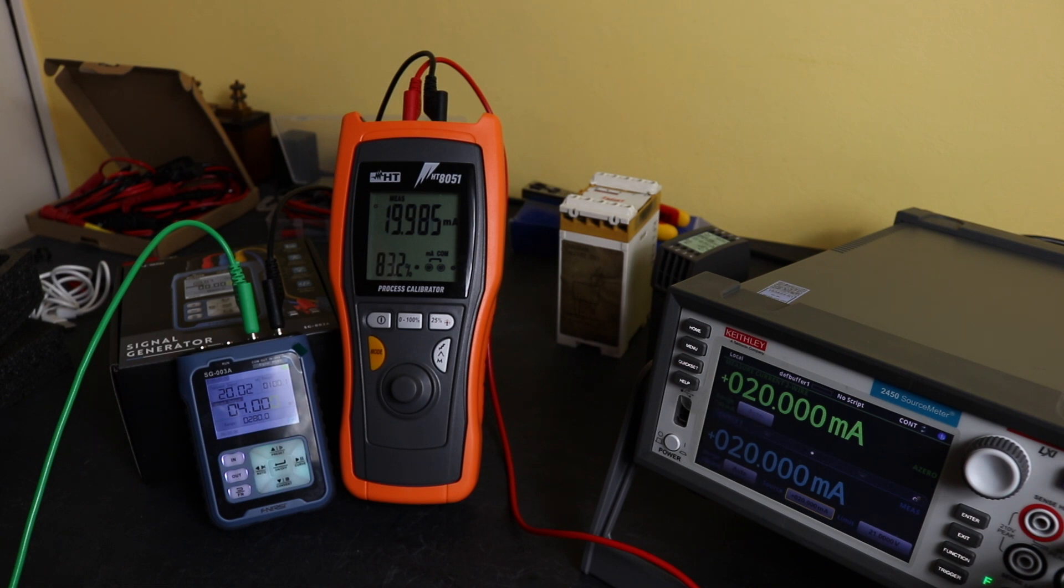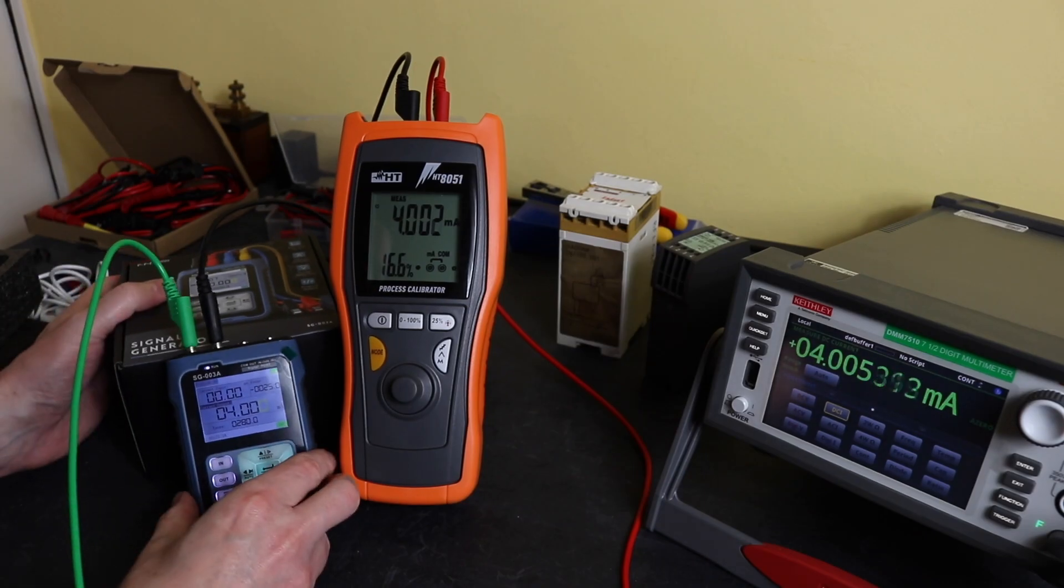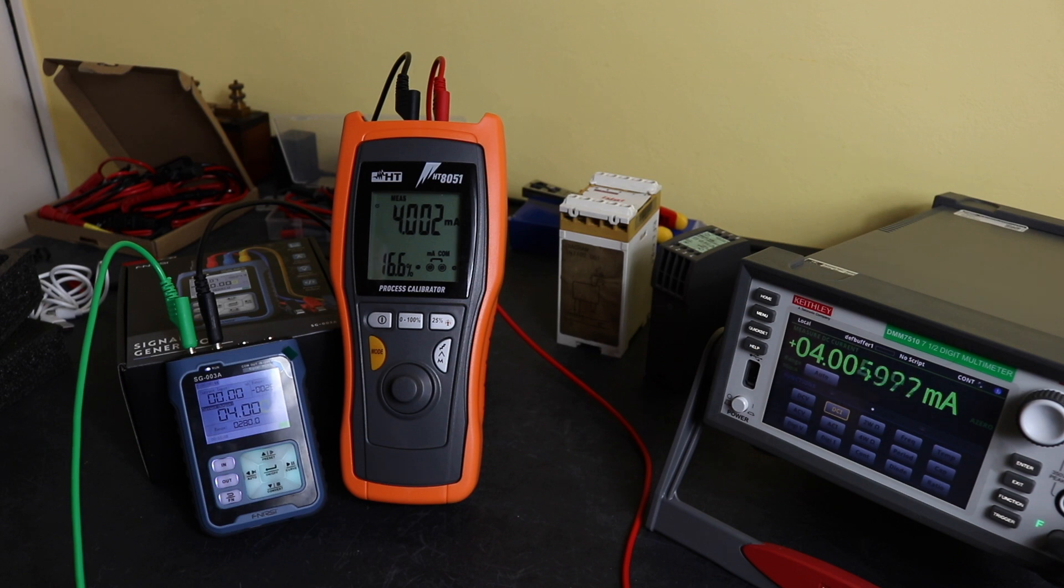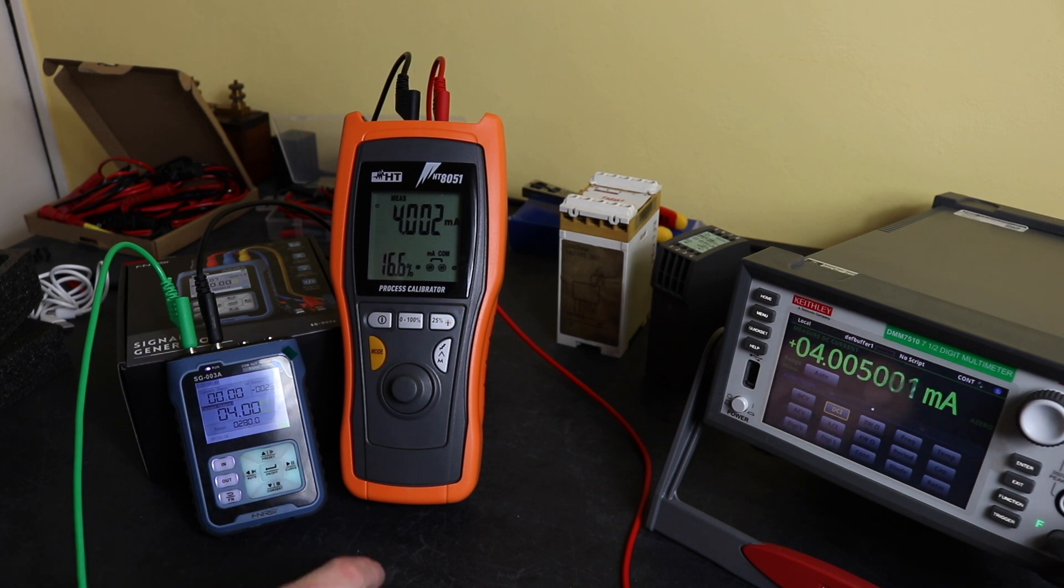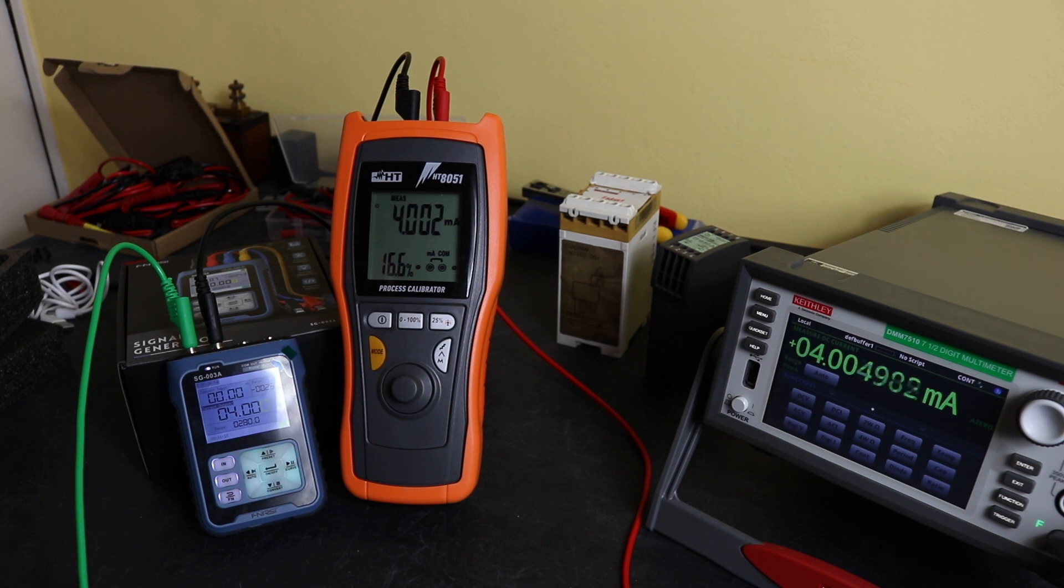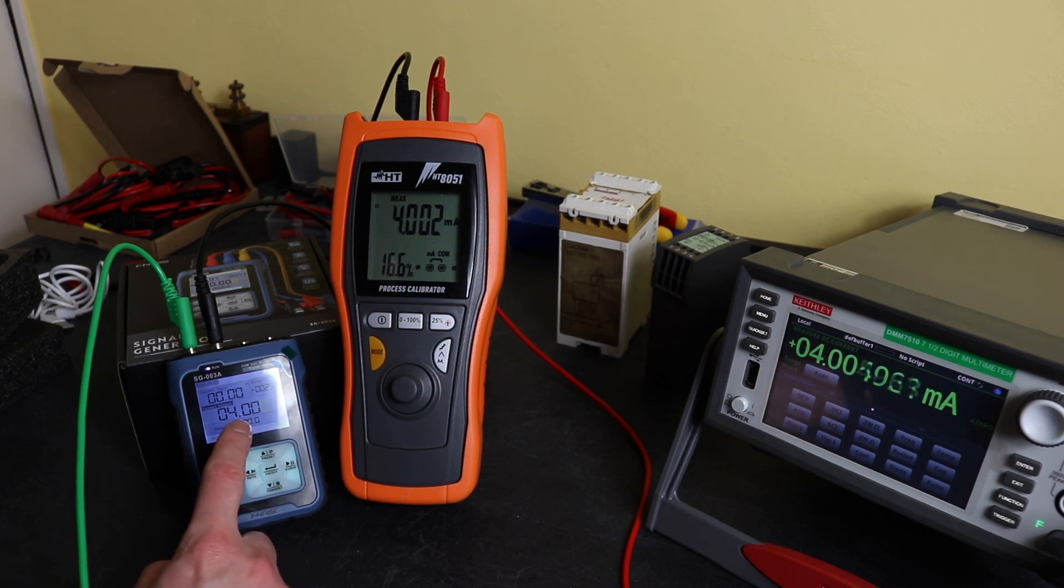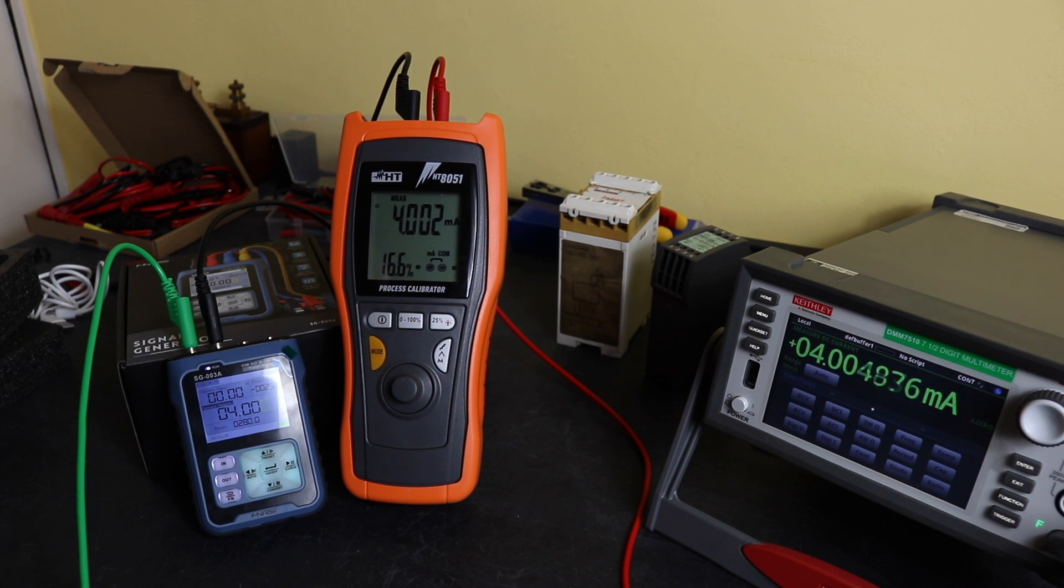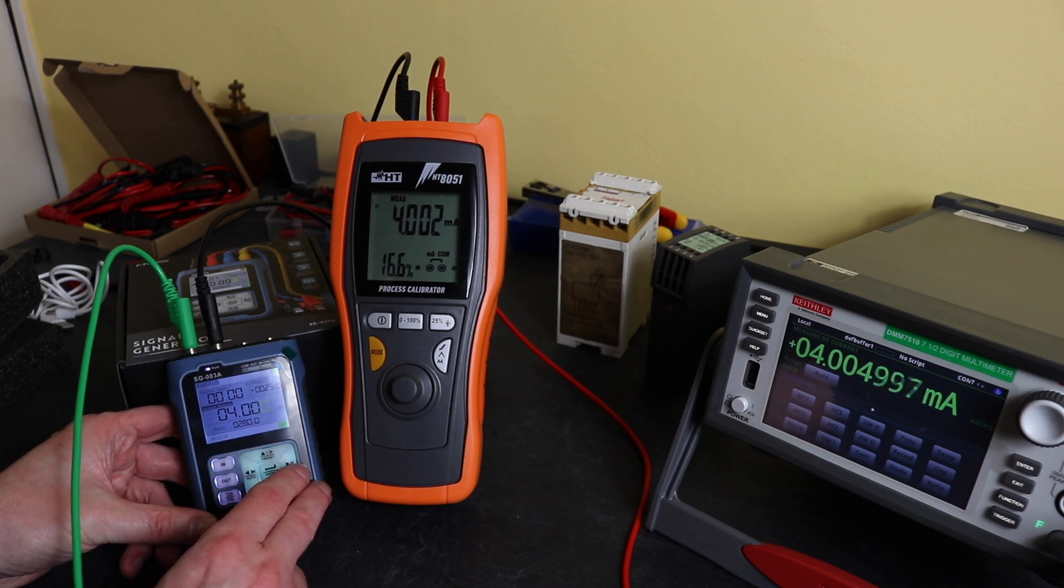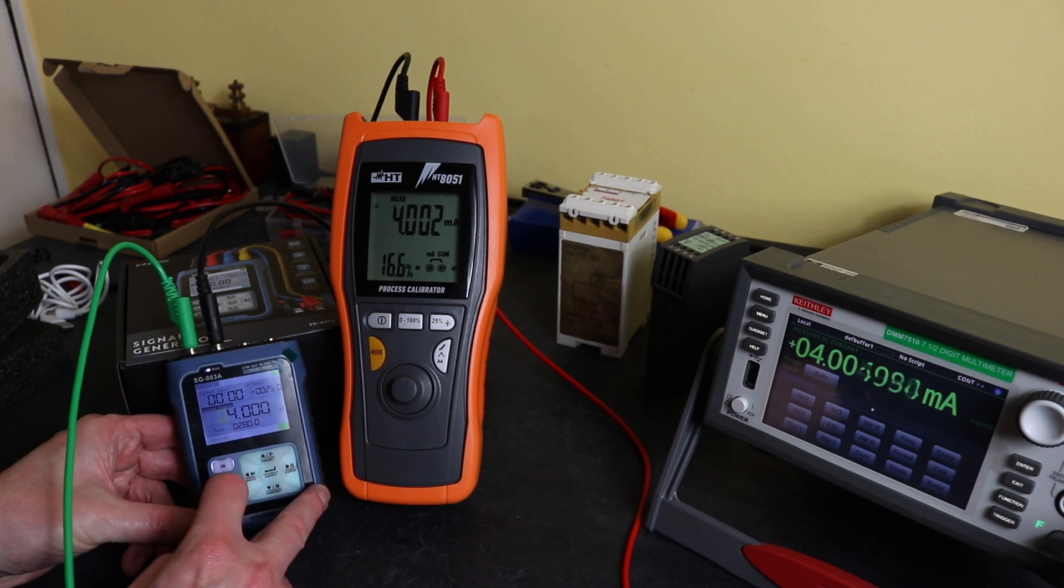Okay, so we've switched things around. We've got our multimeter now running on amps, that's picking up 4.005 milliamps at the moment. We've left our HT8051 reading as well, so that's reading 4.002 this time, and the Finersi says we're putting out exactly four milliamps.